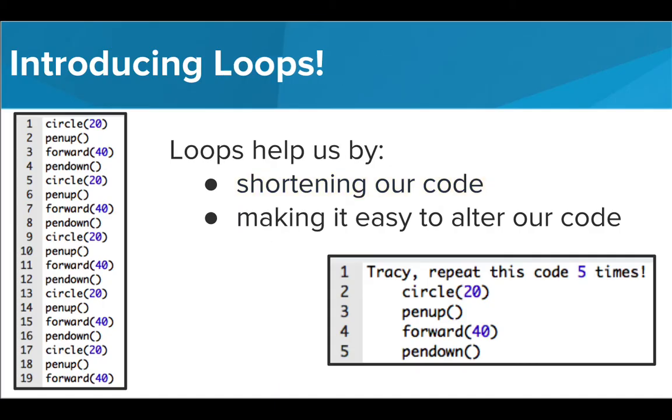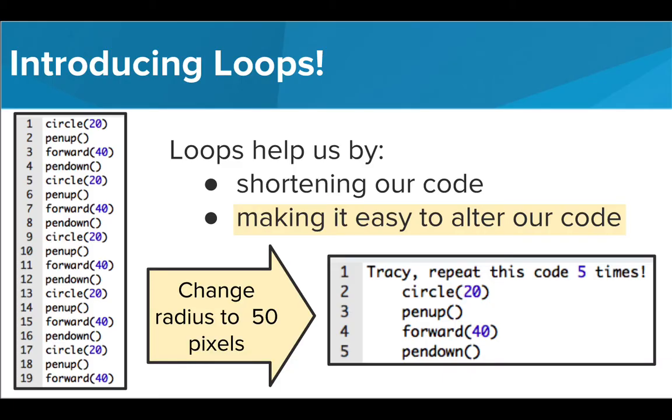Using loops also makes it a lot easier to alter our code when needed. What if we wanted to make a fatter caterpillar, where each circle had a radius of 50? In order to do this with our initial code, we would need to retype the radius in five different places. In our looped code, we just need to change one value and the radius for all circles is changed.